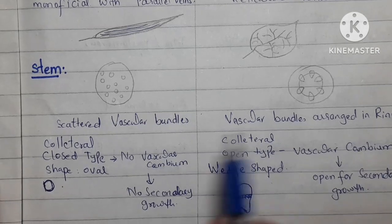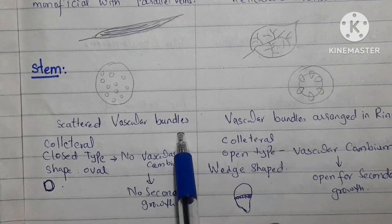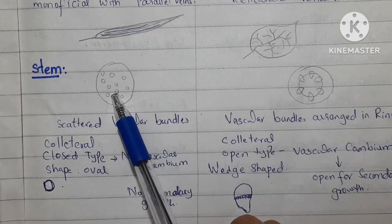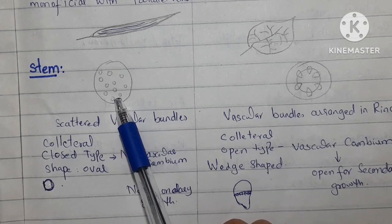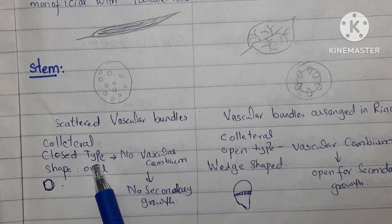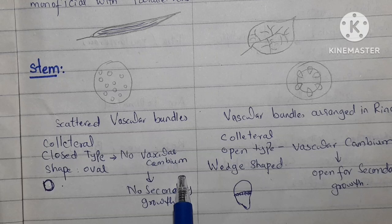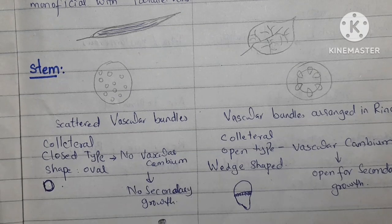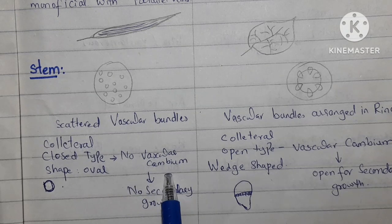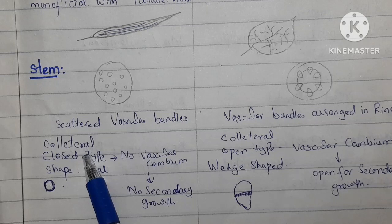Now let's talk about the stem. In the stem, the vascular bundles — xylem and phloem — in the case of monocot are scattered throughout. In case of dicot, they are arranged in rings. In monocot, these vascular bundles are collateral — xylem and phloem are together — and they are of the closed type. Since these vascular bundles are closed type, there is no vascular cambium, so there is no secondary growth, only primary growth. These vascular bundles are oval in shape.